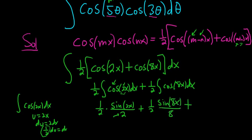Then we still have the plus c. To finish we just multiply these numbers. 2 times 2 is 4. So we get 1 fourth sine 2x. And then 2 times 8 is 16. So 1 sixteenth sine 8x.